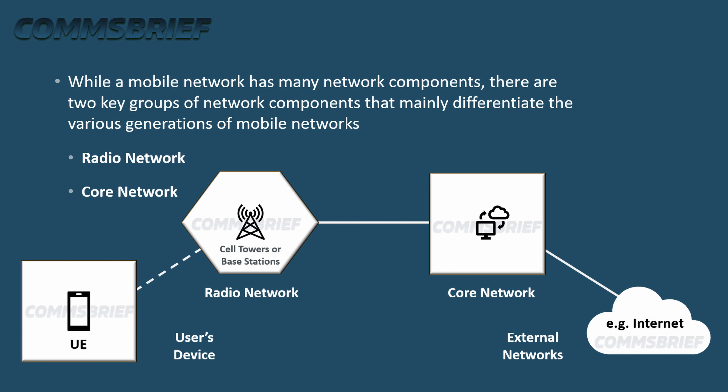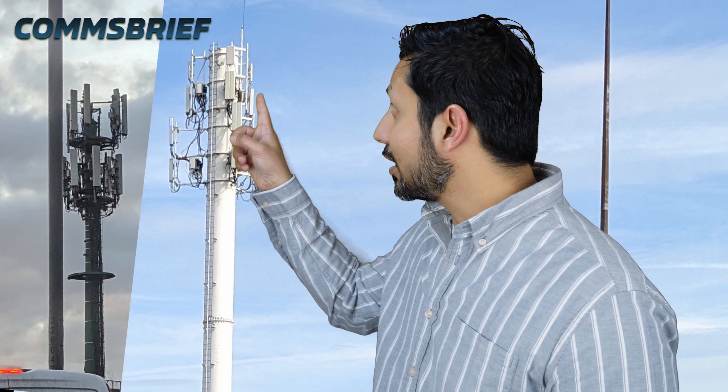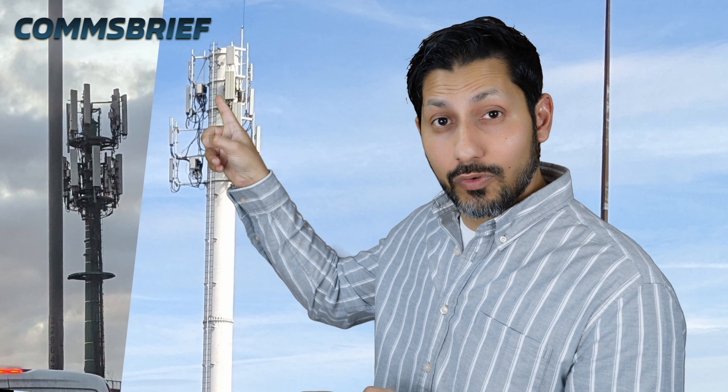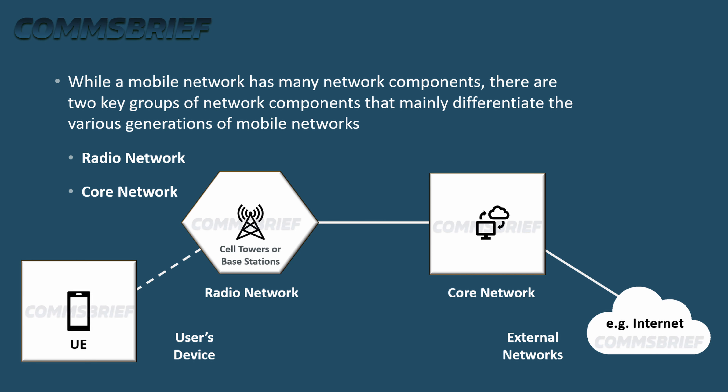Looking at the simplified network diagram on screen: a mobile device, for example a mobile phone, connects to cell towers to establish a mobile network connection. Cell towers are part of the radio network. The radio network then connects to the core network — the brains of a mobile network. Finally, the core network is linked to external networks like landline telephones and the internet, so your phone can connect to outside networks.